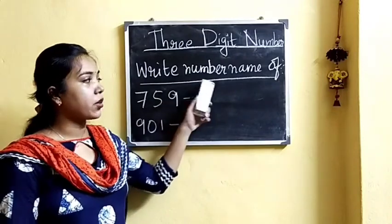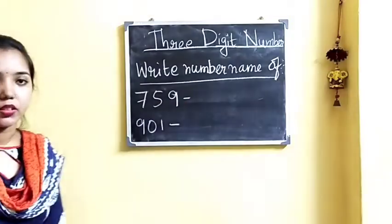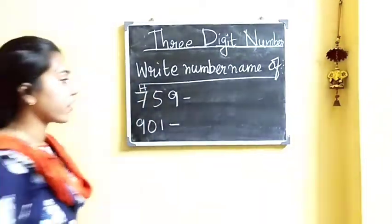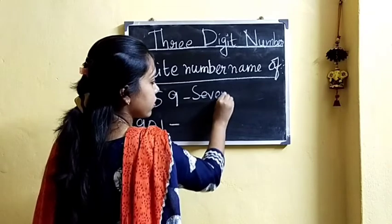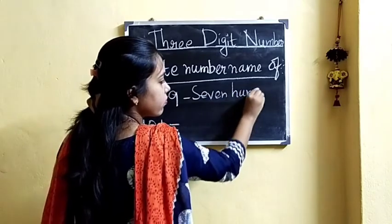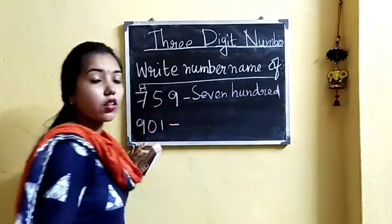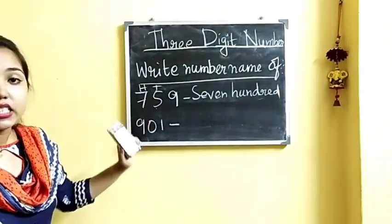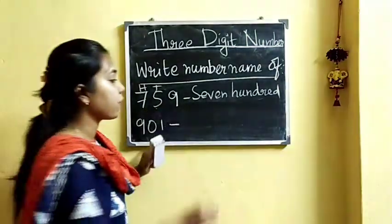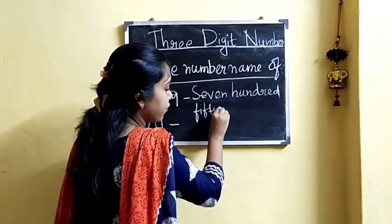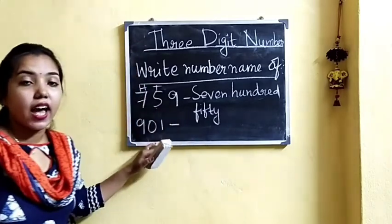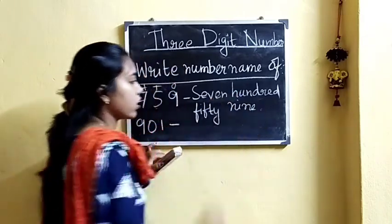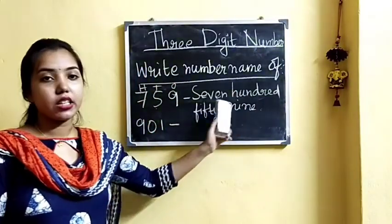Now let us write number names of these 2 given numbers. Here 7 is at the 100s place, so we will write 700. 5 is in the 10s place, that means 5 tens equals 50, so we will write 50. And 9 is at the 1s place, so we will write 9. So the number name becomes 759.